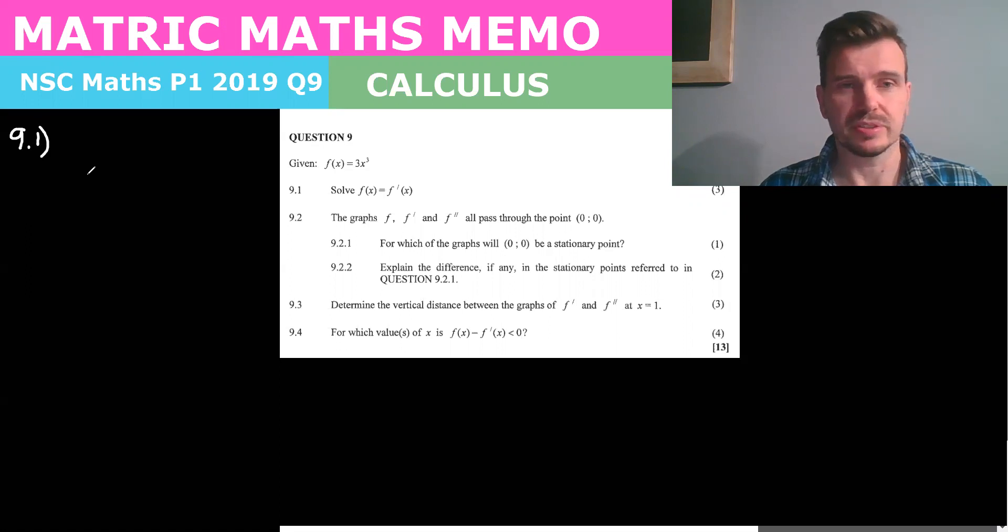So this is a cubic function you're given, f of x equals 3x cubed and we are asked to solve for f of x equals f prime of x, the derivative of x. So we know that f of x is equal to 3x cubed. So let's just find f prime of x and we can then substitute that in.